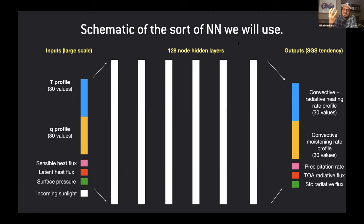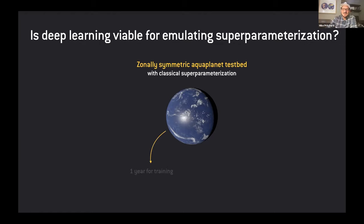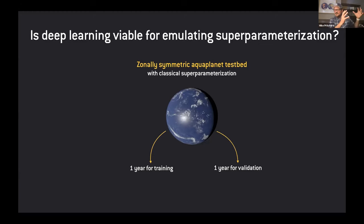This is a local-in-space-and-time input/output configuration. The neural network is responsible for learning the many different convective regimes that can happen anywhere on the planet — just like a convection parameterization should be one-size-fits-all. As a proof of concept, we ran a zonally symmetric aqua planet — a fictitious ocean world with no Walker cells, no zonal asymmetry — and saved very frequent data every 30 minutes: the exchanges between each of the 10,000 grid cells in the host model and each of its 10,000 embedded cloud resolving models. We used one year for training and a separate year to test performance.